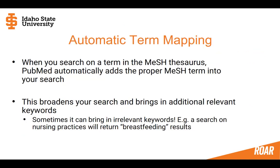When you put words into PubMed, PubMed automatically maps them to their proper mesh terms, so it's doing a lot of work for you behind the scenes. That's what makes PubMed such a powerful database — it's automatically broadening your search and bringing in additional relevant keywords. But sometimes this goes wrong: if you searched 'nursing,' you would get breastfeeding results, which is the classic example.